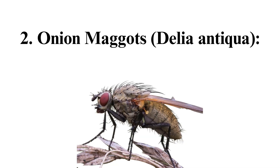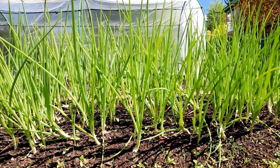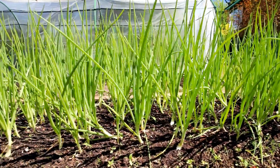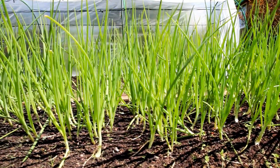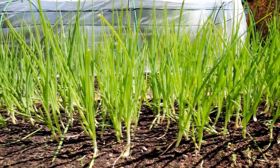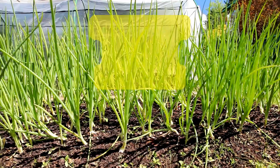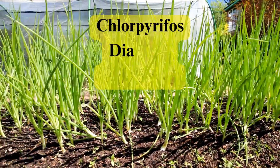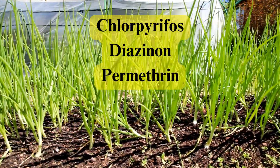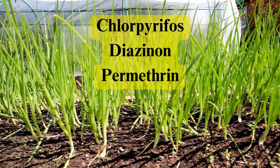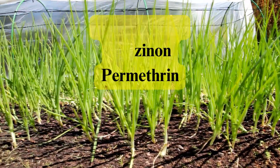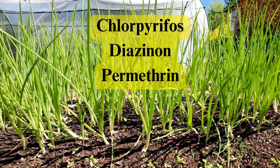2. Onion maggots. The larvae of onion maggots can cause wilting and reduced plant vigor, especially in cool, wet conditions. Effective insecticides include chlorpyrifos, an organophosphate inhibiting the nervous system of onion maggots. Diazinon is another organophosphate applied before planting to control onion maggot infestations.